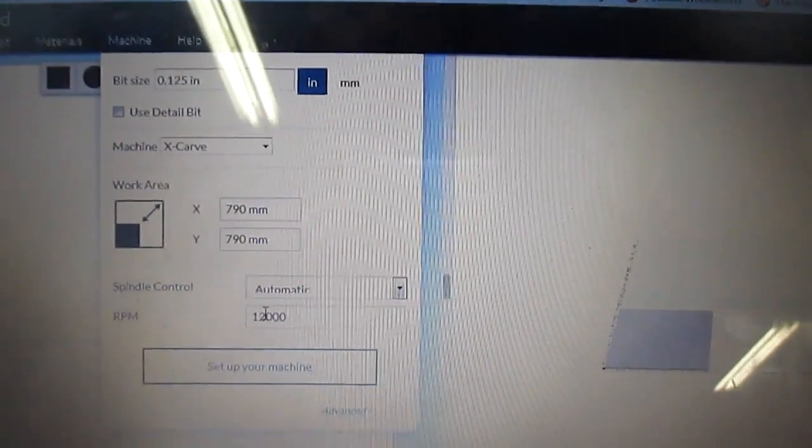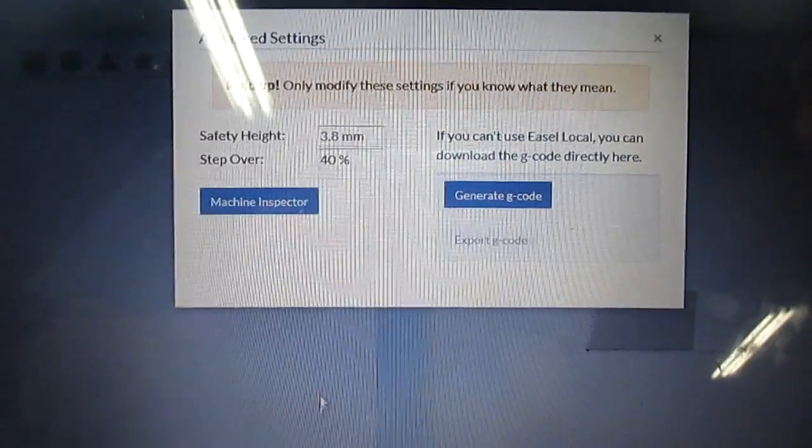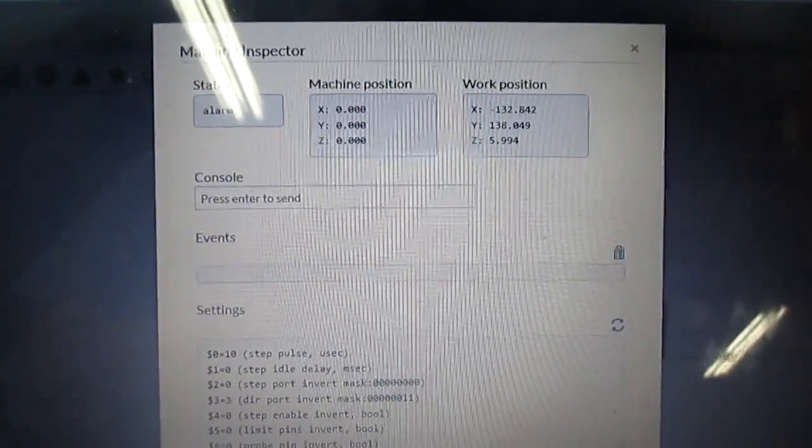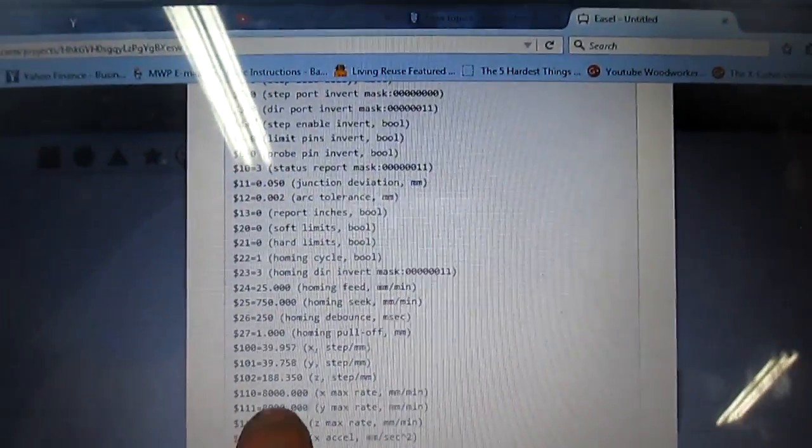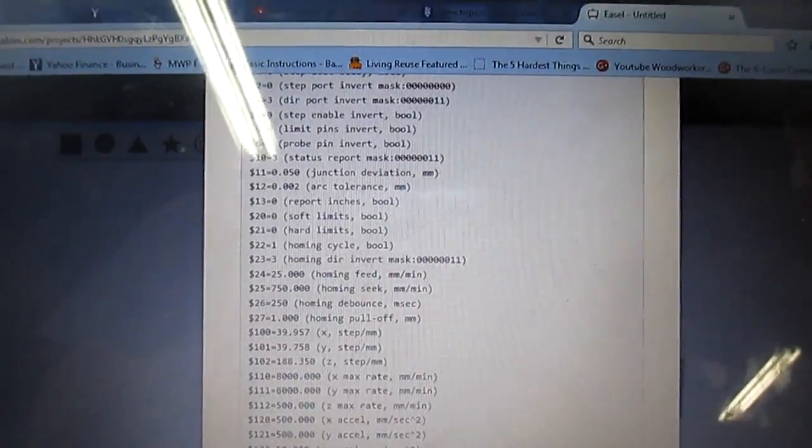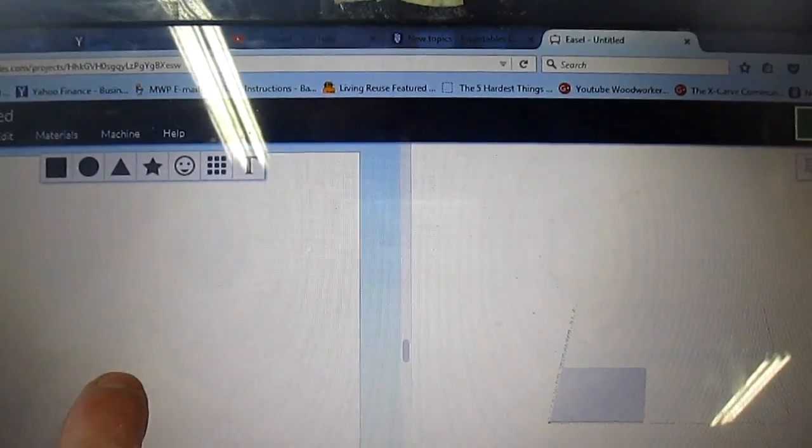And then, just for gits and shiggles, we'll go down and check it again. Make sure that the setting actually stayed in. It's never lost it, but it's always good to double check. 39.957. We're good. And now, I repeat my 590 millimeter movement back and forth a couple times and tweak the setting as necessary.